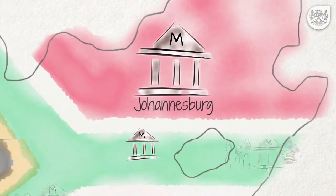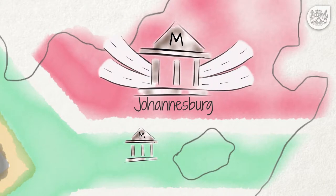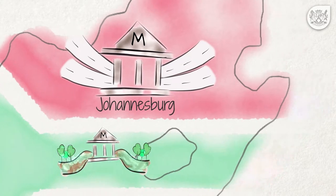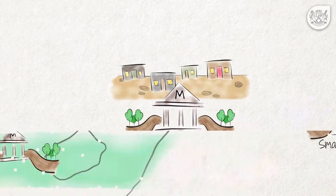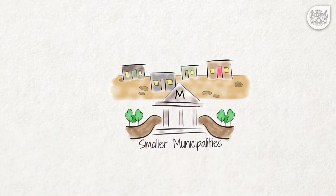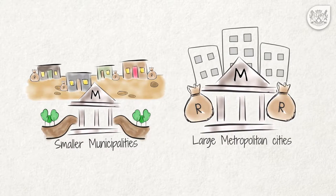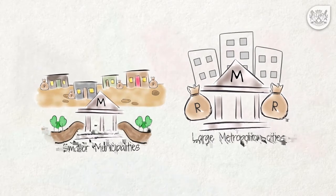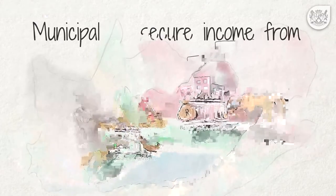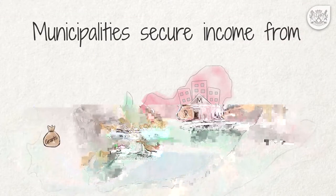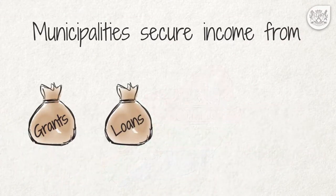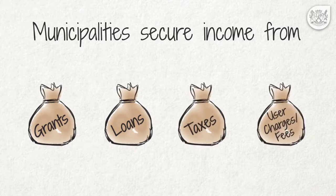A big city like Johannesburg needs to build and maintain many freeways, whilst small rural towns have to take care of fewer hard roads. Smaller municipalities often have to serve a vast rural area, but people don't have the same ability to pay for services as they do in large metropolitan cities. Whatever their size or structure, all municipalities have to secure their income from the same sources: namely grants, loans, property taxes and user charges.